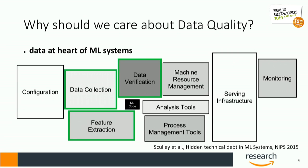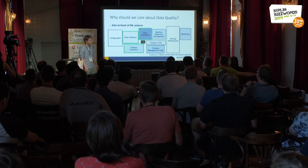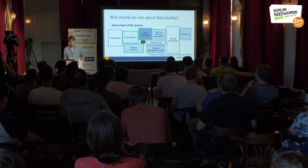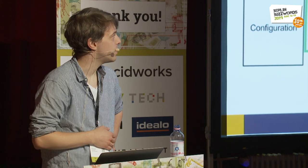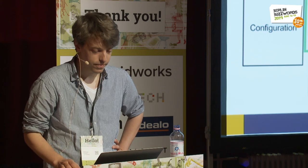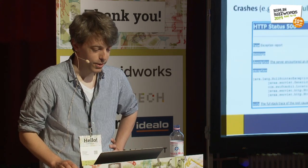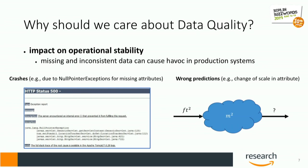If you look at the ML code — that's usually scikit-learn and all of that — usually in a production scenario, ML models coexist with other very data-centric components. That might be data collection, data verification, and feature extraction. As all of these components deal with data, you might consider looking at data quality for these components as well. The last point I want to make is on operational stability. Everyone knows of the infamous null pointer exception, and these types of exceptions can bring any production system to an abrupt halt.